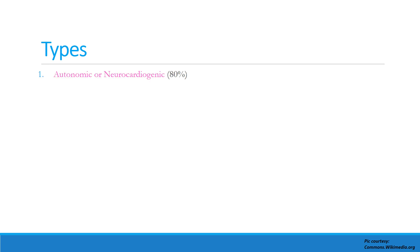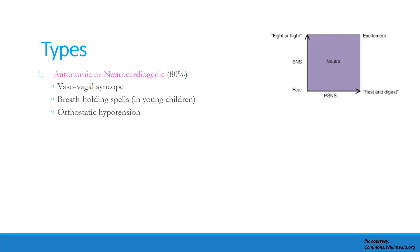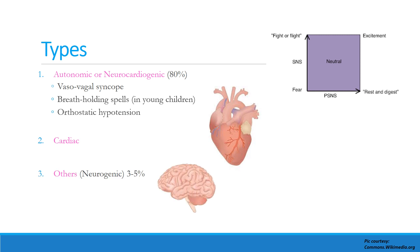There are mainly three types of syncope. First is autonomic or neurocardiogenic syncope, the most common, seen in 80% of cases. It is also referred to as circulatory syncope and is generally benign. Its three subtypes are vasovagal syncope, breath holding spells, and orthostatic hypotension syndrome. Next is cardiac syncope, and finally others, which predominantly include neurogenic causes or convulsive syncope, seen in around 3–5% of cases.